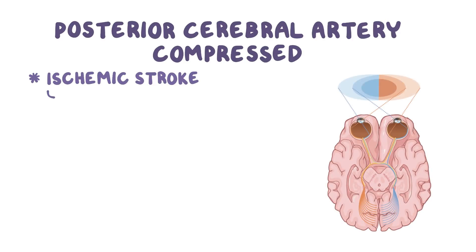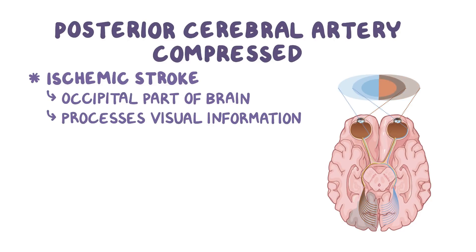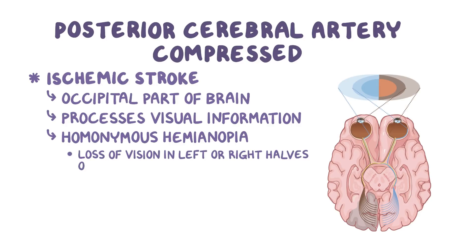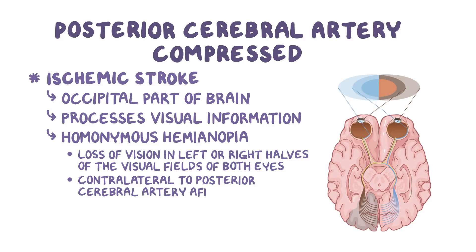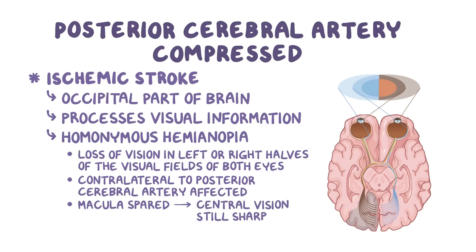The posterior cerebral artery can also be compressed, which results in ischemic stroke of the occipital part of the brain, responsible for processing visual information. This leads to homonymous hemianopia, which is a loss of vision in either the left or right halves of the visual field of both eyes. The vision is lost in halves contralateral to the posterior cerebral artery that is affected. Although there is a partial loss of vision, macular function is spared, meaning central vision is still sharp and detailed, because the part of the occipital lobe in charge of the macula gets blood from both the posterior cerebral artery and the middle cerebral artery.